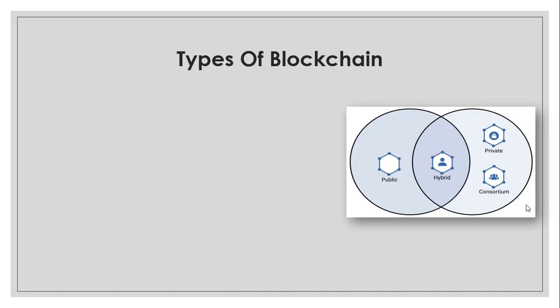At the base there are only four types of blockchain. The first is public blockchain, which is open to the public. Second is private blockchain. Third is hybrid blockchain, which is a combination of both public and private. Fourth is consortium blockchain, which we can consider a special type of private blockchain.